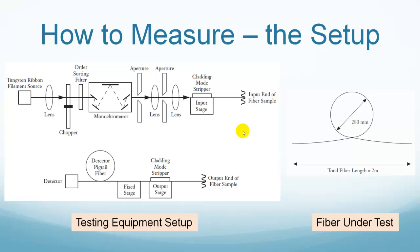To determine the actual cutoff wavelength of a single mode fiber, optical fiber manufacturers use the transmitted power method. The left side figure shows the testing equipment setup. The right side figure shows the fiber under test. The test sample is a piece of 2 meters of single mode fiber wrapped in a single turn with a diameter of 280 millimeters.